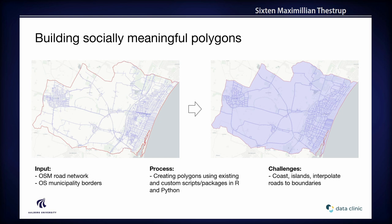How do we arrive at something on the sub-municipal level — meaningful polygons where we can put in data and show useful information to municipalities and general users? Our starting point is the OpenStreetMap road network, shown here on the left for an example municipality. We then polygonize all of that using existing and custom scripts in both R and Python that we developed ourselves, and we end up with something like this. There are some issues with coasts and islands — Denmark is geographically complicated.